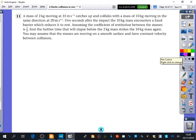It just... It sounds a bit different. So we've got a mass of 2 kilograms is moving at 35 metres per second, catches up and collides with a mass of 10 kilograms moving in the same direction at 20. Five seconds after the impact, the 10 kilogram mass encounters a fixed barrier which reduces it to rest. So later on, it's going to come over here and it's going to be at rest. Right, okay. So first of all, we need to figure out what happens in this collision. So this is going to be pretty simple. Let's call it X and Y.